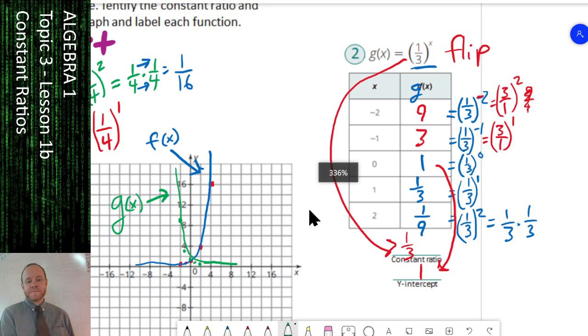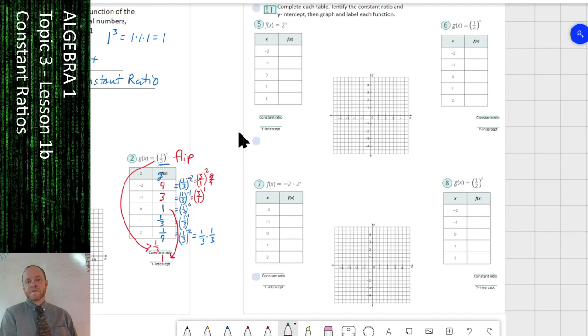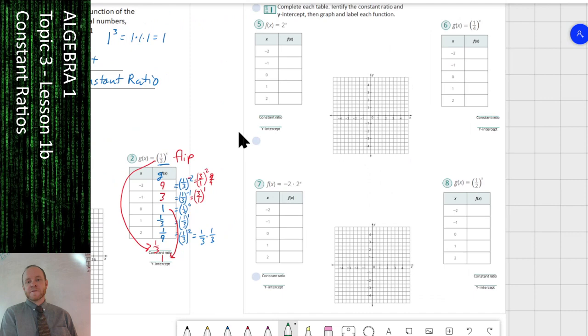So you can go ahead and use these two examples—4 to the x power, 1 third to the x power—to help you with the first two problems on your worksheet. Instead of 4 to the x, it's 2 to the x. So you're just changing that number. Your math is going to be a little bit different, but your process is just the same. And the process is going to be just the same with this one over here. So I'll let you get to it. See you guys in class tomorrow or whenever the next time you have classes.